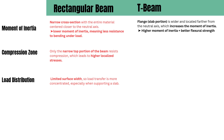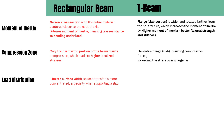Number 2: Larger compression zone. In a rectangular beam, only the narrow top band resists compression. But in a T-beam, the slab — the flange portion — participates in resisting compressive forces. This helps to spread the stress across a larger area, reducing the strain and making the beam more efficient under load.